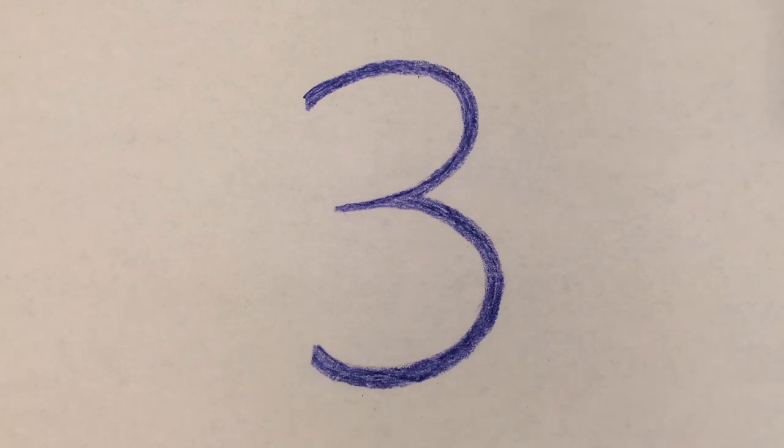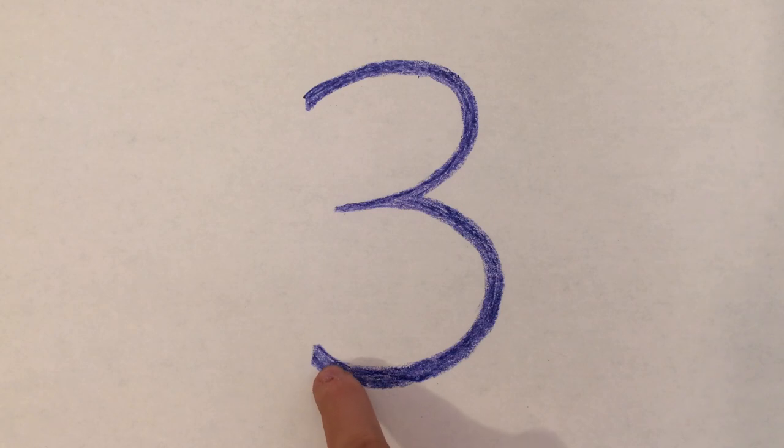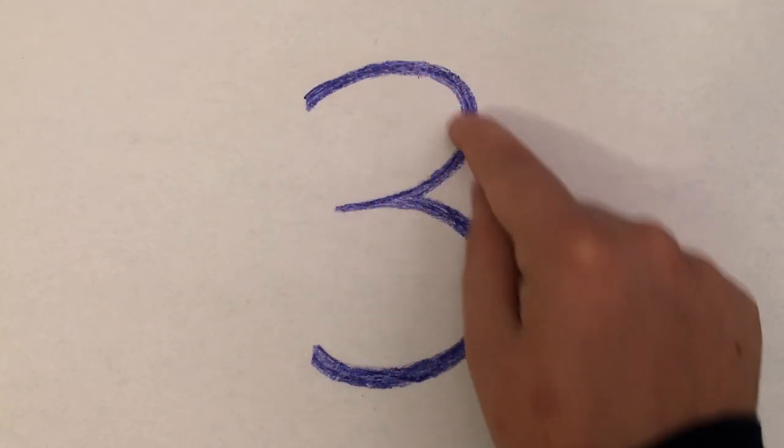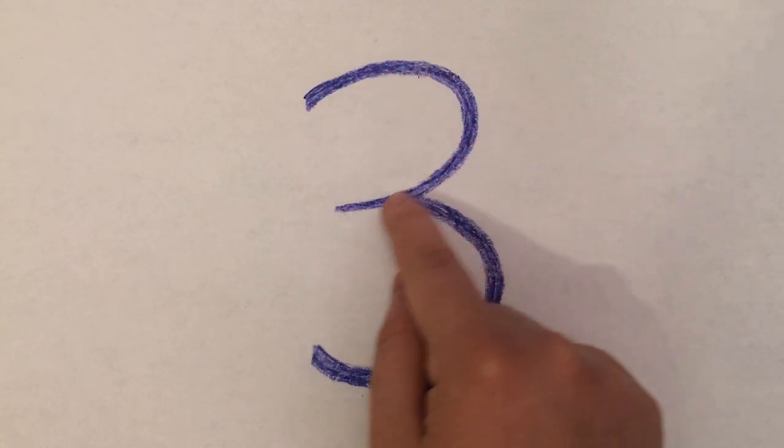And you can ask them to trace the number a few times, making sure to say the name of the number as they do it. So they can go in and say 3, 3, 3.